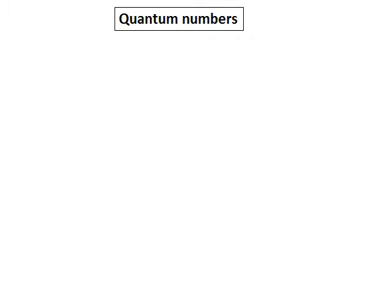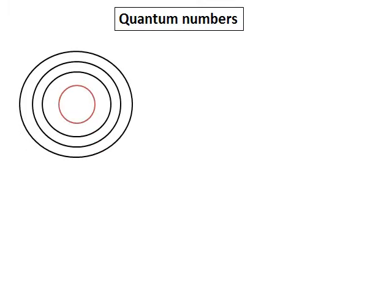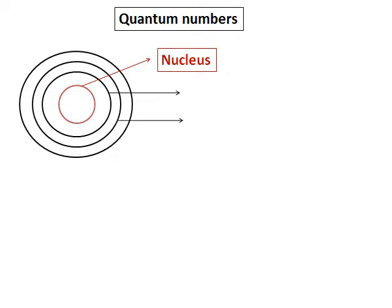The arrangement of electrons around the nucleus can be represented using something called a quantum number. Consider the representation of an atom as shown. The red thing in the middle is the nucleus, and the orbits around the nucleus — the black ones — are the places where the electrons will reside. I have represented 1, 2, and 3 orbitals.